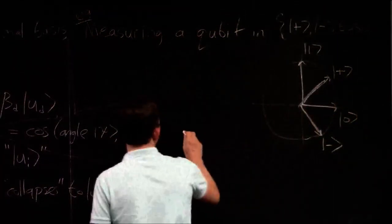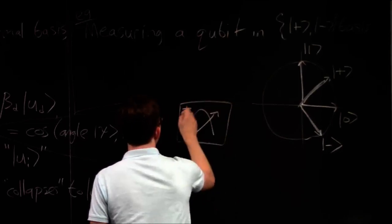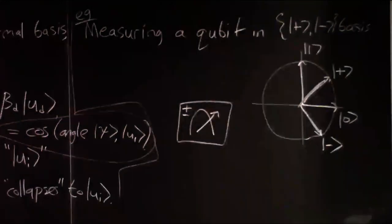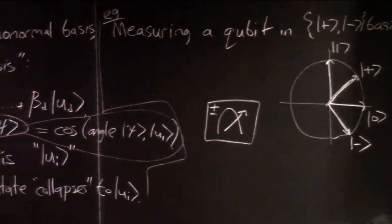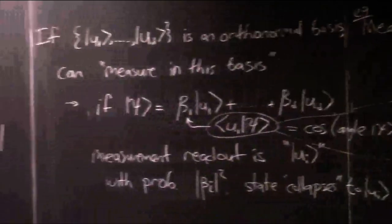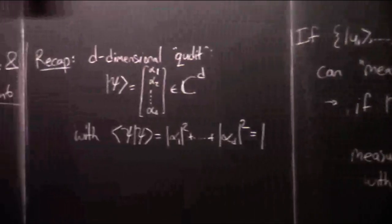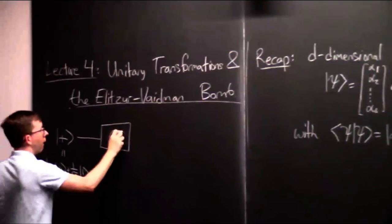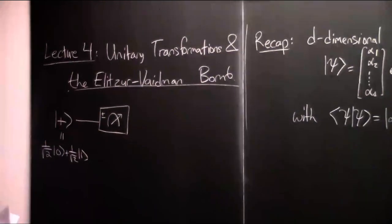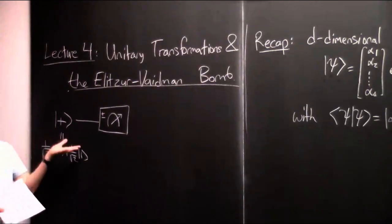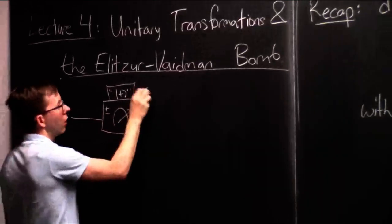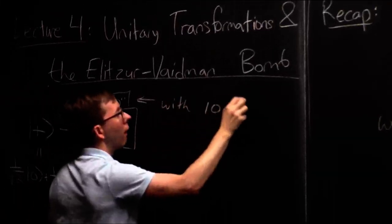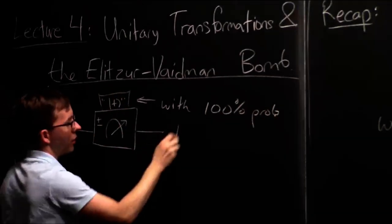I'll draw that device with a plus or minus in the corner to remind you it's measuring in this alternate basis. What happens if we fire a particle whose state is plus — which is 1/√2 times |0⟩ plus 1/√2 times |1⟩ — into such a measuring device? You need to write plus in the plus-or-minus basis, which is straightforward: it has all its amplitude on plus. So this thing will report plus with 100% probability. And when it actually comes out, it's still in the plus state.